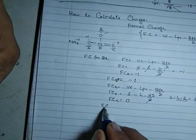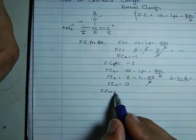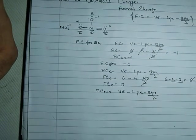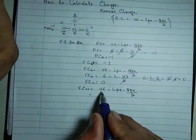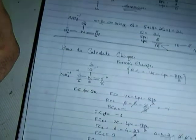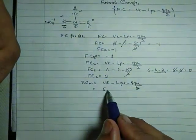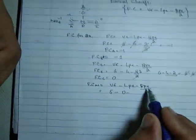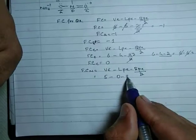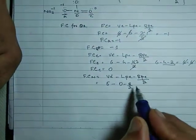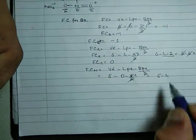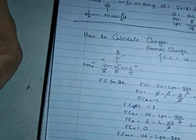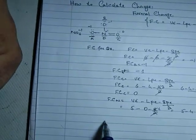Now for nitrogen: the formula is VE minus LPE minus BPE divided by 2. Nitrogen has 5 valence electrons, zero lone pair electrons, and 8 bond pair electrons, so 8 divided by 2 is 4. Thus 5 minus 4 equals plus 1.